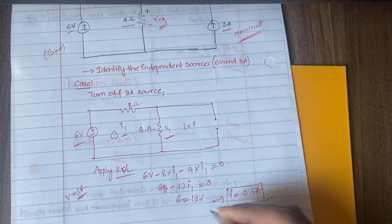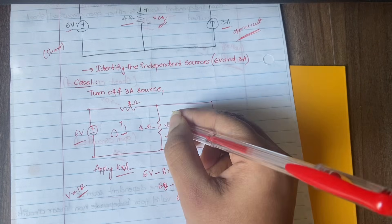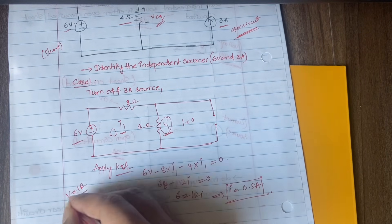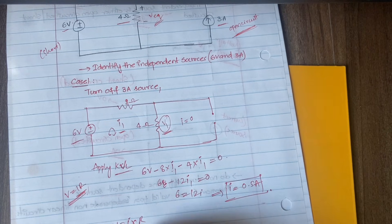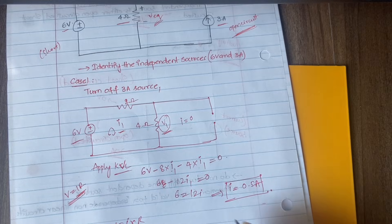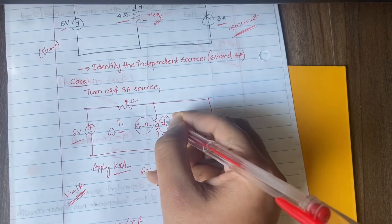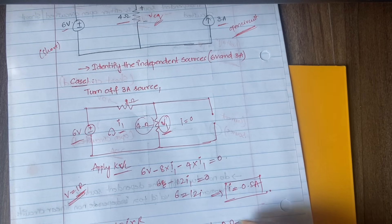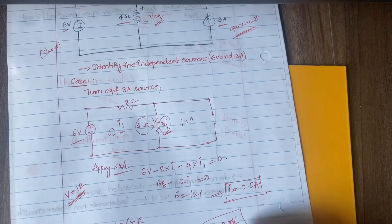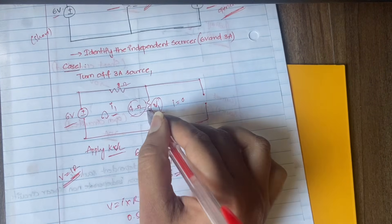From the KVL equation, i1 equals 0.5 amperes. Now, V equals i times R. Using i1 = 0.5 amperes and R = 4 ohms, V1 equals 0.5 times 4, which equals 2 volts. So the voltage across the four ohm resistor due to the six volt independent source alone is V1 = 2 volts.